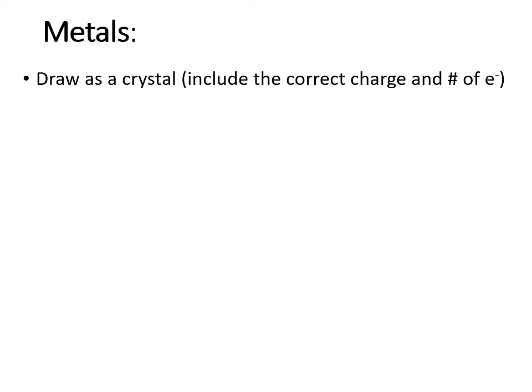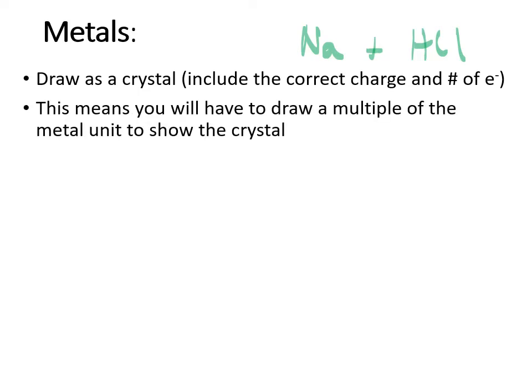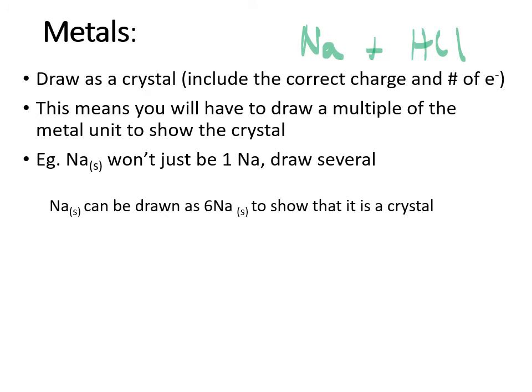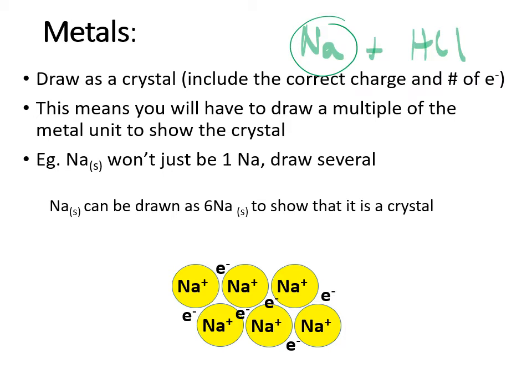For metals, often with a formula we'd have a metal reacting with something and we just write the formula for one of them. For example, if sodium was reacting with hydrochloric acid, you'd think there'd just be one sodium atom, but they're actually found in a metallic crystal. So you want to draw multiples of them — if you're trying to communicate what sodium is actually like, draw a bunch of them. Sodium is not a noble gas, so you would not want to think of it as one particular atom; it should be drawn as a group of atoms.